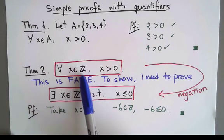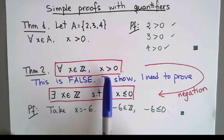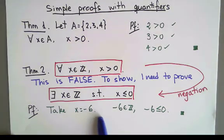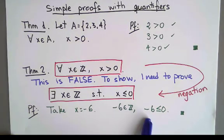Then we wrote the same statement for the integers, and we proved that it was false that all integers were positive. And the way we proved it was false was by finding one element in the integers that was not positive.